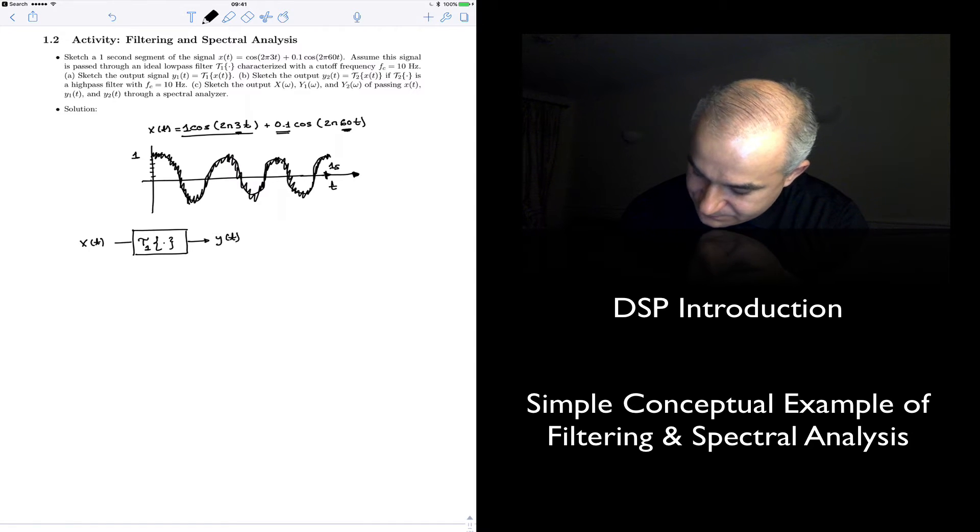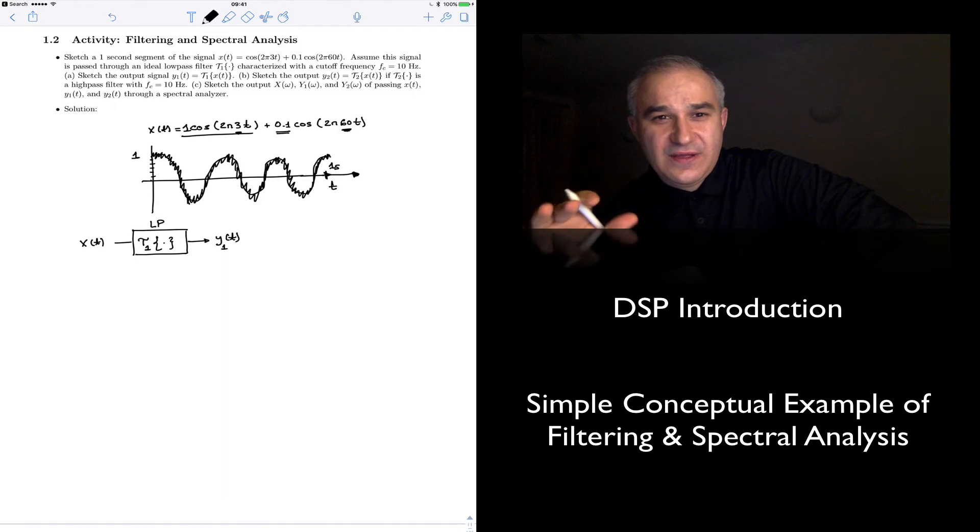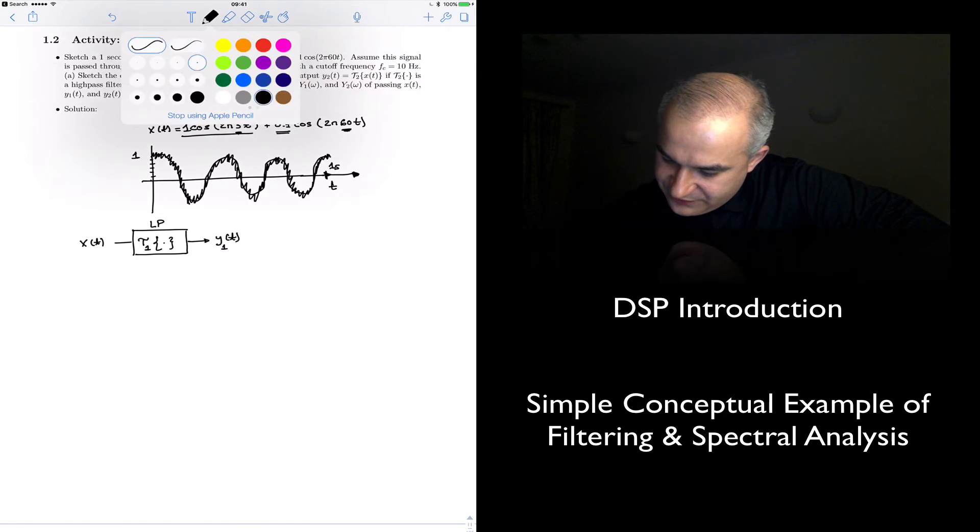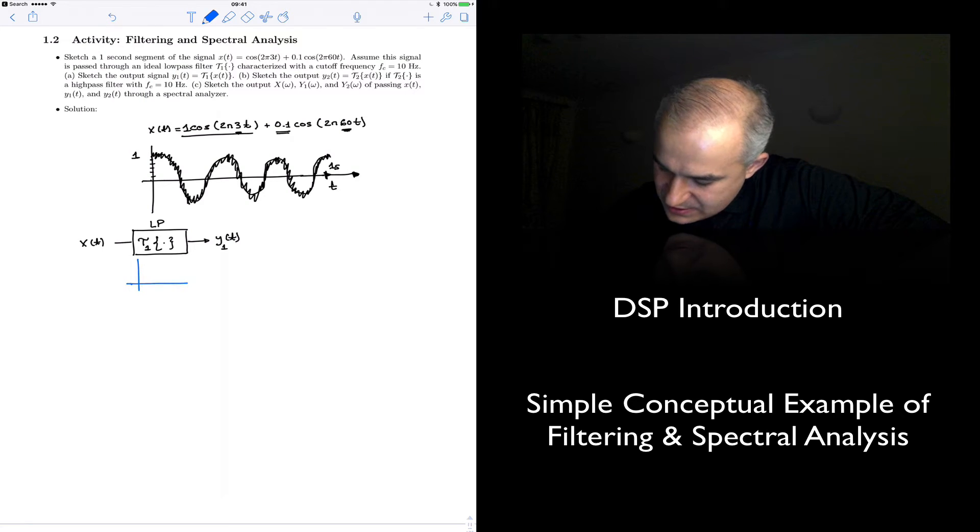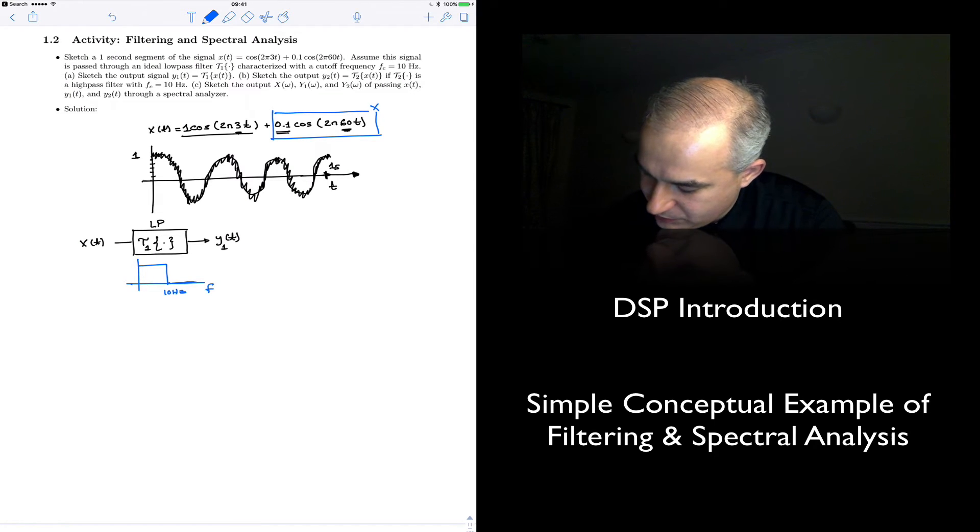So I'm going to denote this as T1. And we have a y(t), or y1. And this is a low-pass filter. Meaning it's a filter that allows low frequencies to go through, but it cuts off the high frequencies. And so, if we have a low-pass filter, something with a frequency response, let me use a different color for this, like this. And this is an ideal one. Low frequencies go through, and then they are cut. This is frequency. And this is 10 Hz.